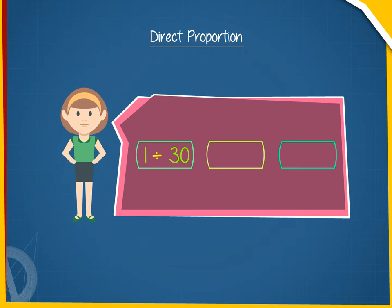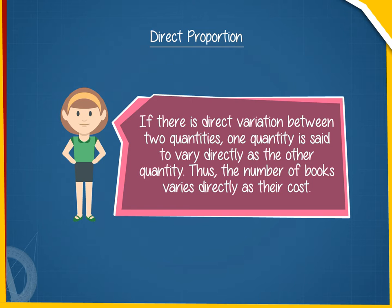In this example, 1/30 = 2/60 = 3/90, and so on. If there is direct variation between two quantities, one quantity is said to vary directly as the other quantity. Thus, the number of books varies directly as their cost.